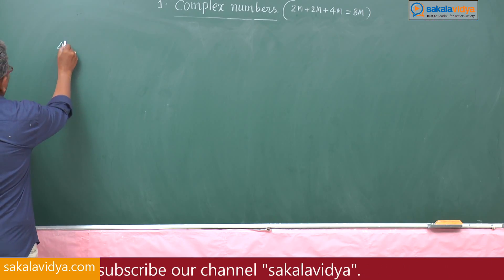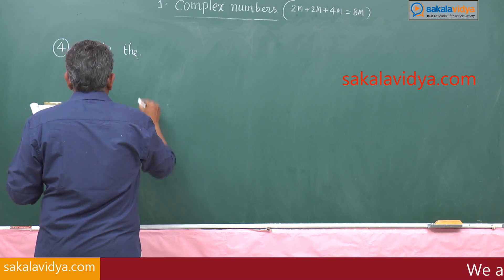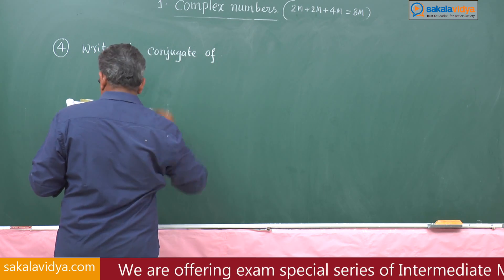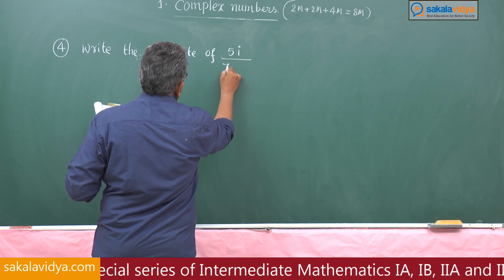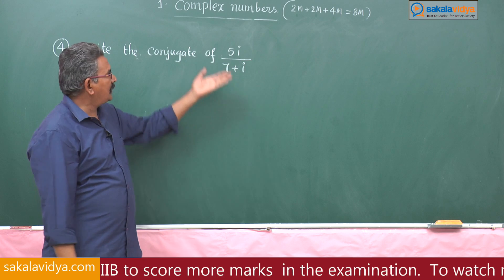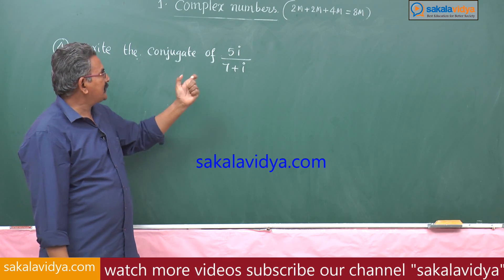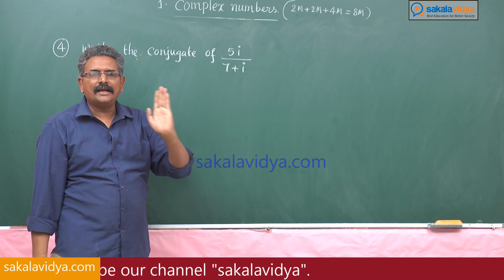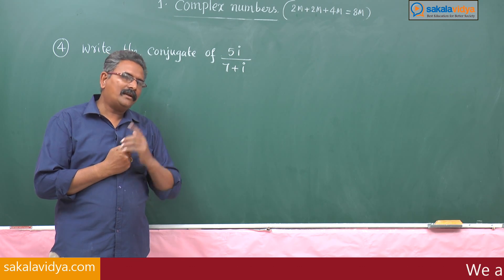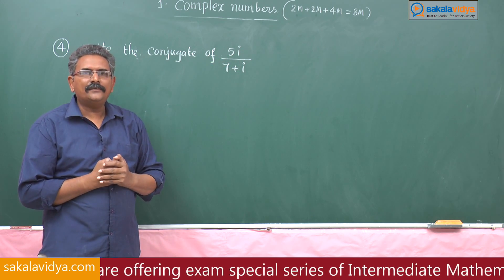Fourth problem: write the conjugate of 5i by (7 + i). To find the conjugate of 5i/(7+i), first convert it to the form a + bi. After that, the conjugate of a + bi can easily be written as a - bi. So the first step is to convert 5i/(7+i) into the form a + bi.